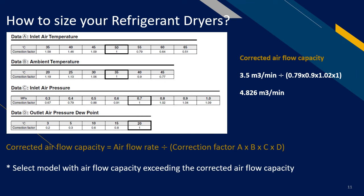Now, it is very important to size your dryers. Correction factors have to be used to size your dryers correctly. There are four correction factors altogether: the inlet air temperature, the ambient temperature, the inlet air pressure, and finally the outlet air pressure dew point, also known as the dryness of the air. First, we calculate the corrected air flow capacity based on the formula shown here. This formula is basically the air flow rate divided by the product of all the correction factors.